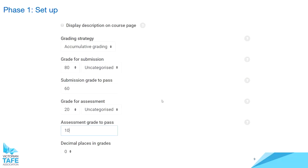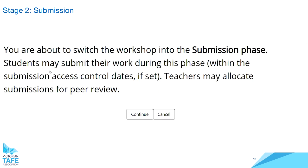We elected to use accumulative grading, in which comments and a mark are given in relation to specified aspects. There are two elements to setting up these grades: the first is the grade for the student's own submission, called the grade for submission; and the second is the grade for the quality of their skills in assessing their peers, called the grade for assessment. As you move between phases, similar screens appear. Moving into the submission phase, students can create their submissions — though note that grading strategies can't be changed once the submission phase has been entered.